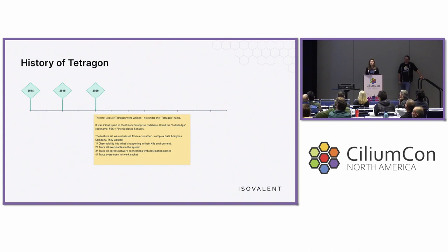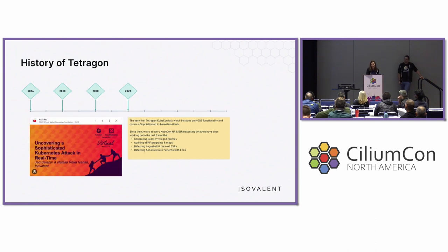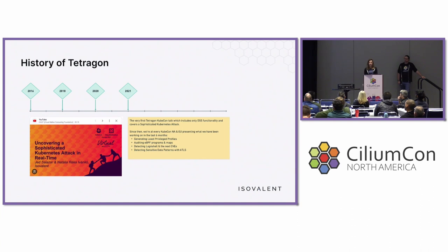The first feature set was requested from a customer — a complex data analytics company. They wanted observability into what's happening in their Kubernetes environment: trace all executables, trace egress connections leaving the cluster, and trace every network socket. After 2020, in 2021, the first KubeCon talk happened about Tetragon including all open source functionalities, and since then we've been at every KubeCon EU. We had talks about creating least-privileged profiles, auditing eBPF programs and maps, detecting Log4Shell and next CVEs, and sensitive data patterns with kTLS.